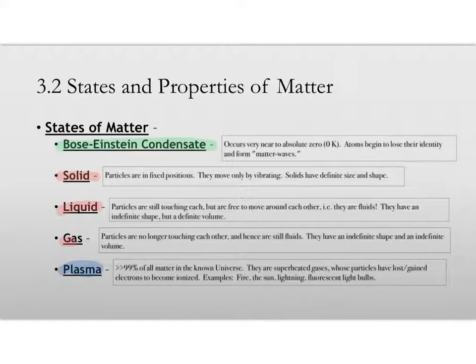If your sample is not a Bose-Einstein condensate, but slightly higher in energy, you might have a solid. And solids are types of matter in which the particles are in fixed positions. They're touching each other. They move, but only by vibrating. And so because of this, solids have a definite size and a definite shape.